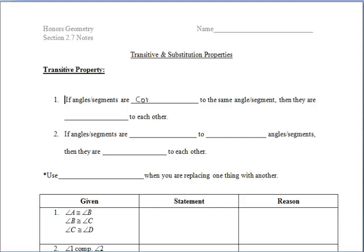Let's start off with the transitive property. One indication to use this property is if you see angles or segments that are congruent to the same angle or segment, then that means that those angles or segments are congruent to each other.